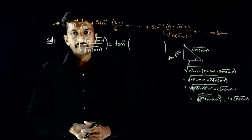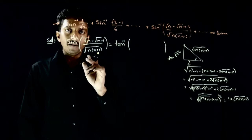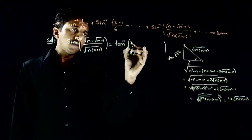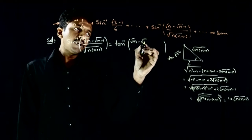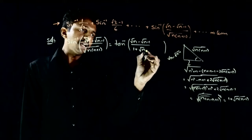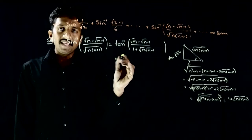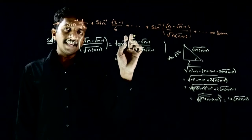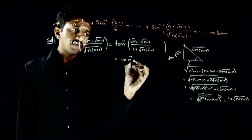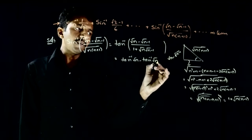So sine inverse of (root n minus root(n-1)) over root(n(n+1)), when converted to tan inverse, gives: tan inverse of (root n minus root(n-1)) divided by (1 + root(n)·root(n-1)). This matches the identity tan inverse of (x - y)/(1 + xy), which equals tan inverse(root n) minus tan inverse(root(n-1)).